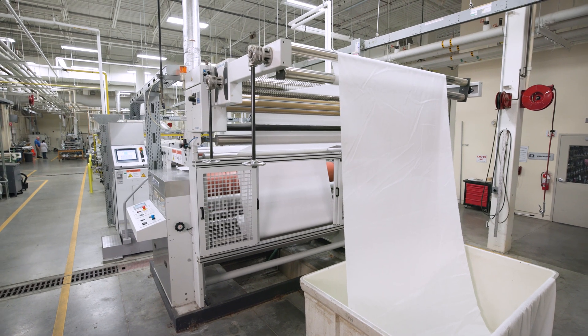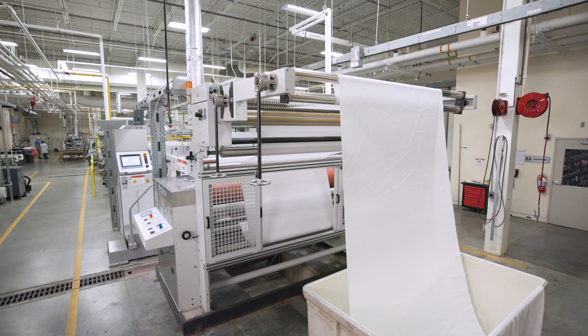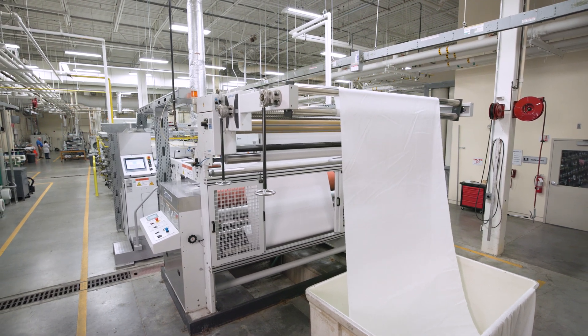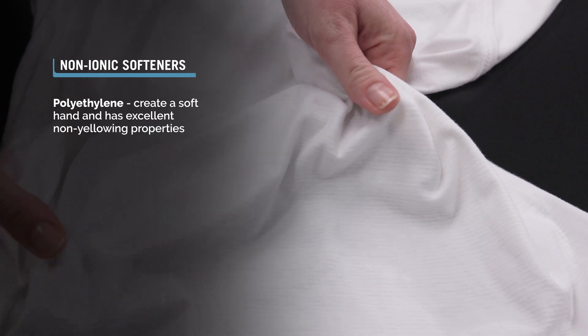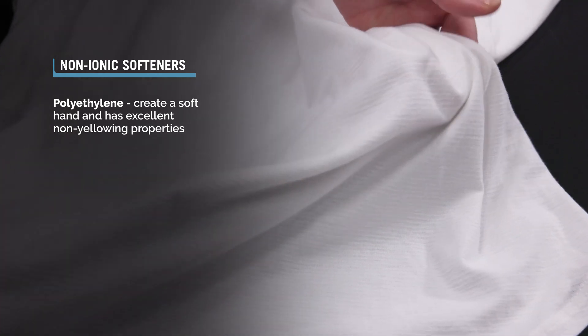Non-ionics have no ionic affinity for cotton and must be applied by a pad application. The polyethylene type of non-ionic softeners create a soft hand and has excellent non-yellowing properties.